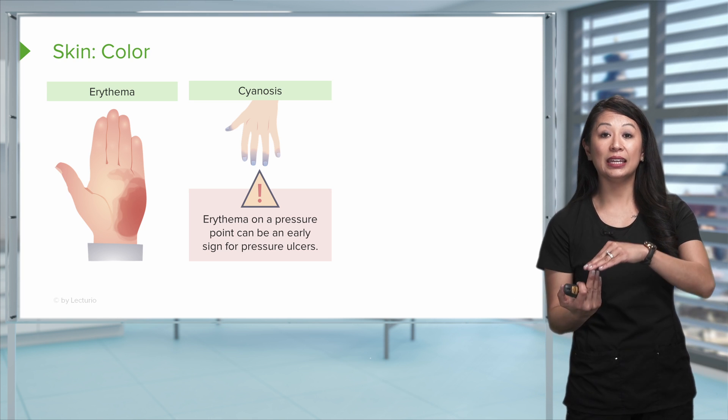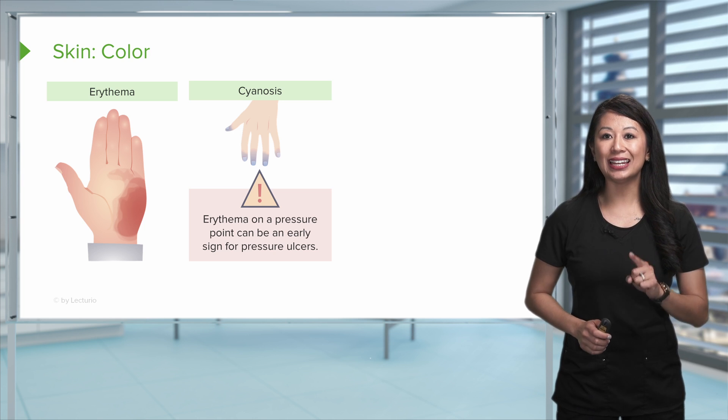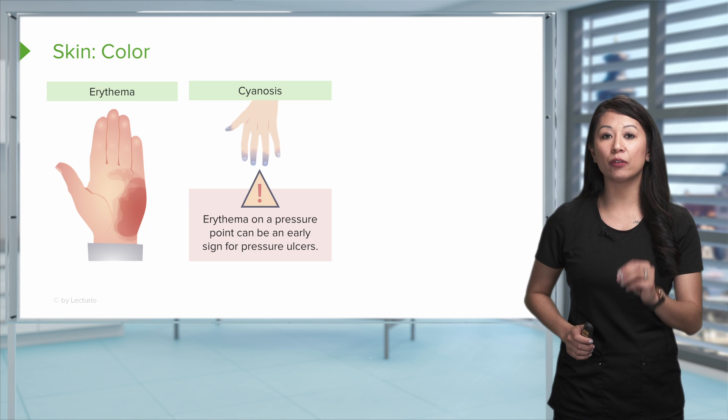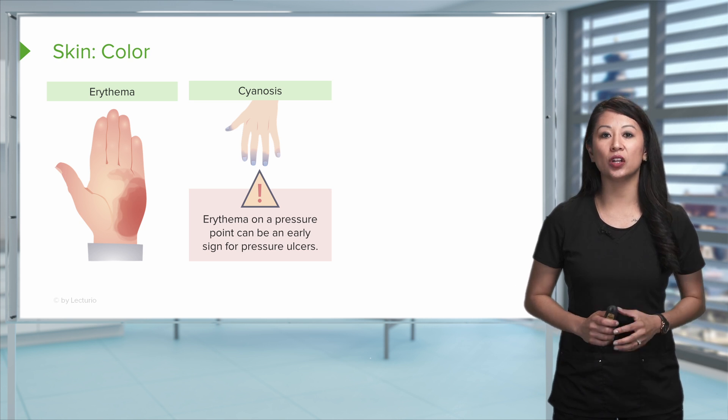Here is a really important point to note. If you see erythema on any pressure points or bony prominences, such as the coccyx, back of the shoulders, maybe the heels, and you see this redness, that could be an early indicator that the patient may have a pressure ulcer that's starting to grow. If that's the case, we've got to assess and intervene early.